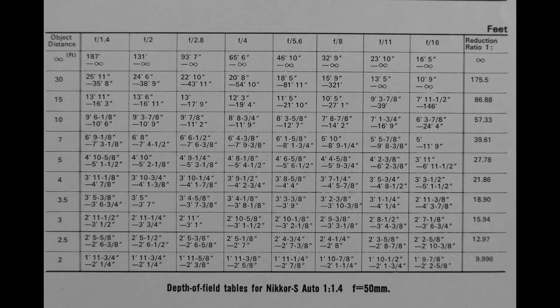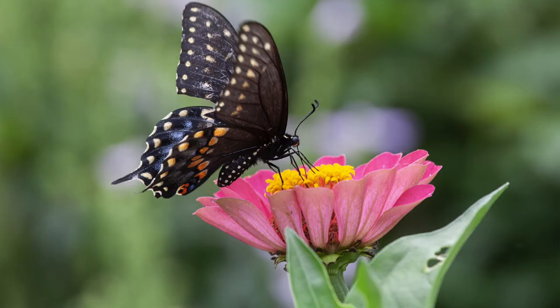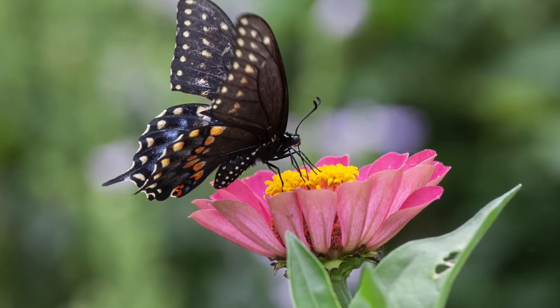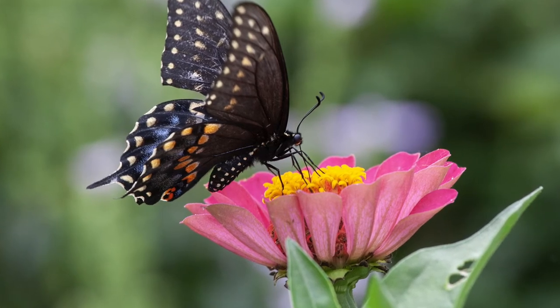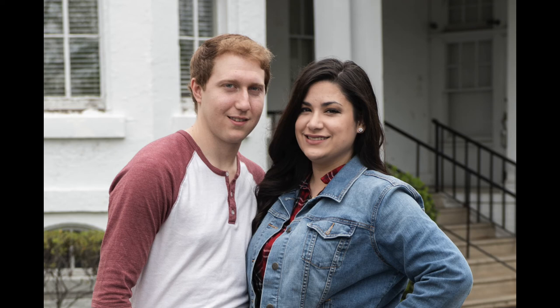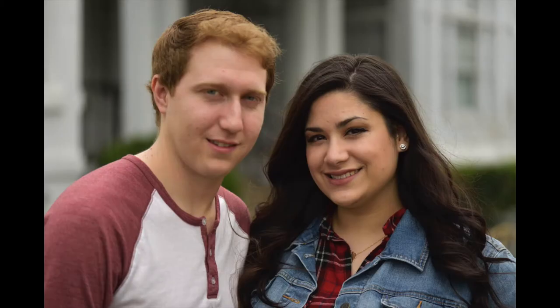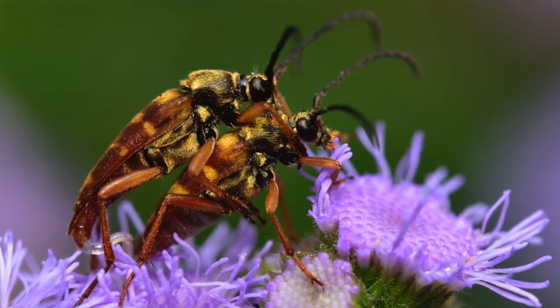The third factor is distance from the subject. The closer you are to a subject with a given lens and aperture, the less depth of field. So a wide angle lens at 10 feet from the subject will give you more depth of field than a 50 millimeter lens at 10 feet. When we get to five feet from the subject, the wide angle lens is still giving you more depth of field than the 50, but less depth of field than when you were at 10 feet.